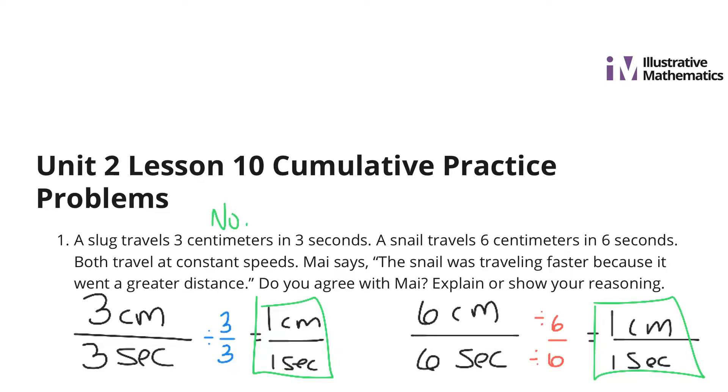Explain or show your reasoning. Well, we've showed it. You can say slug and snail both travel at 1 centimeter per second. Let's move on to question 2.